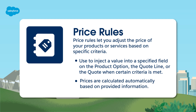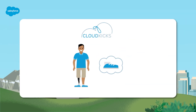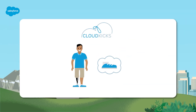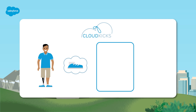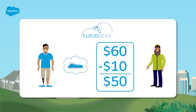Prices are calculated automatically based on provided information. For instance, imagine you own a shoe store, Cloud Kicks. The list price for your signature sneakers is $60 in Sales Cloud. To drum up new business, you want to provide a $10 discount for all first-time customers. You could use price rules to make that happen.